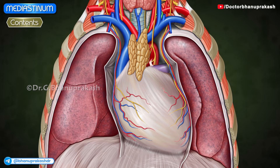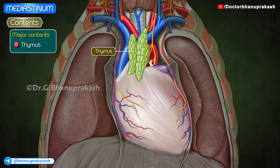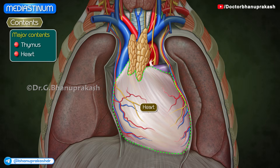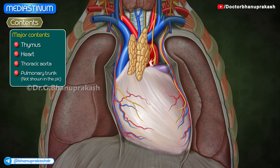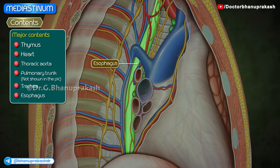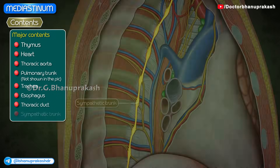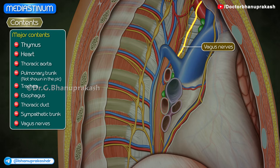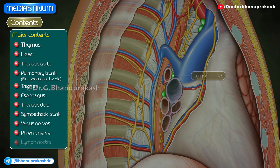The major contents of the mediastinum are the thymus, heart which is enclosed in the pericardial sac, major arteries and veins such as the thoracic aorta, pulmonary trunk, trachea, esophagus, thoracic duct, neural structures such as the sympathetic trunks, vagus nerve, phrenic nerve, and lymph nodes.